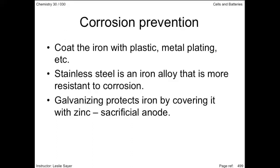Iron covered in a protective layer of zinc is called galvanized iron. If the protective layer is broken, the zinc will still protect the iron because it is more readily oxidized than iron. Since the zinc is oxidized before the iron, the zinc — or any other material that is a stronger reducing agent — is referred to as a sacrificial anode.